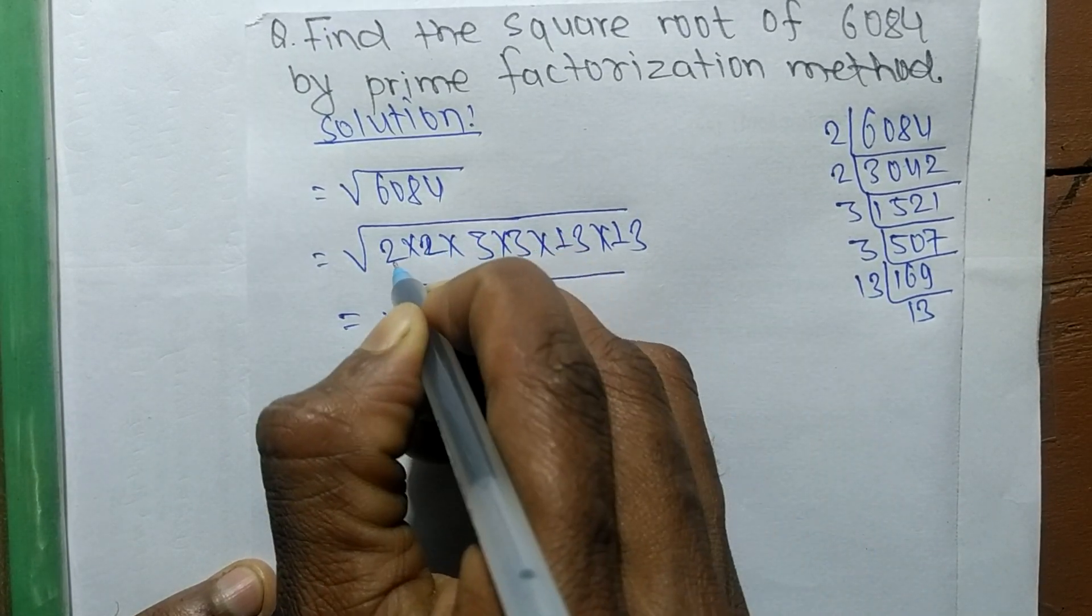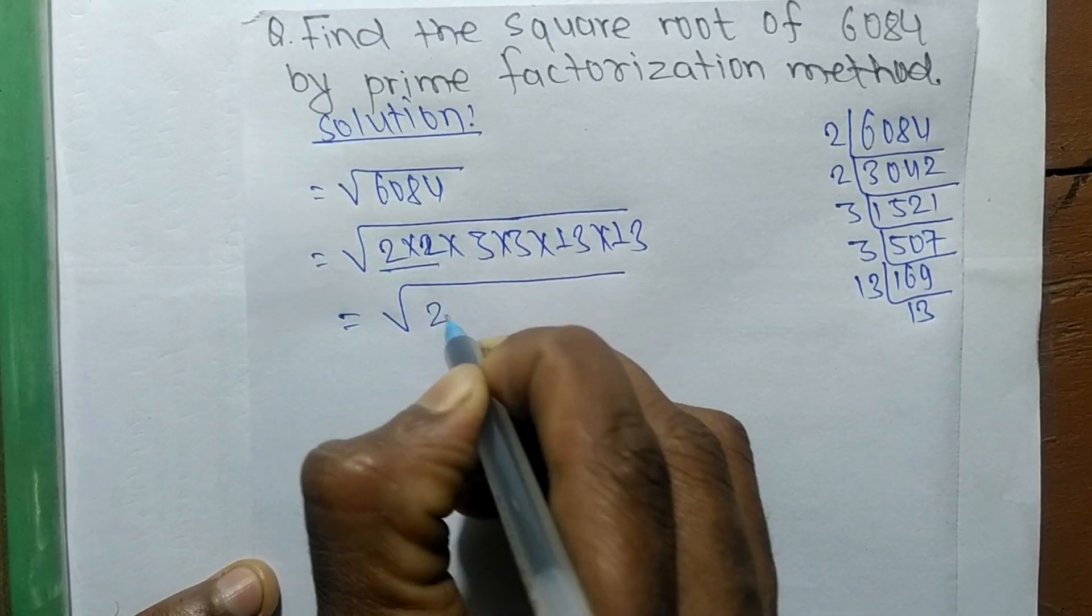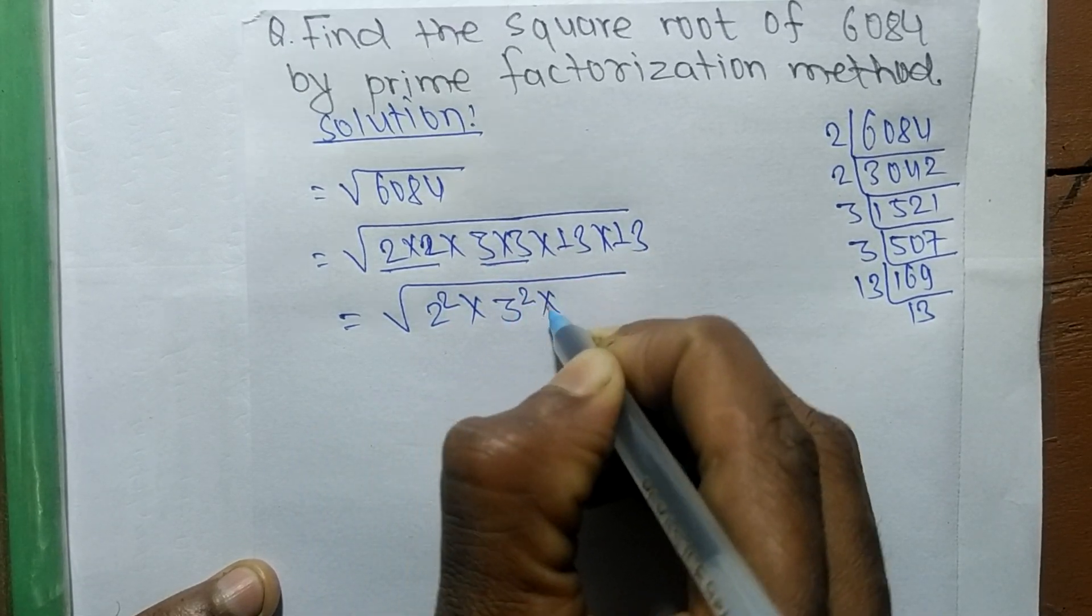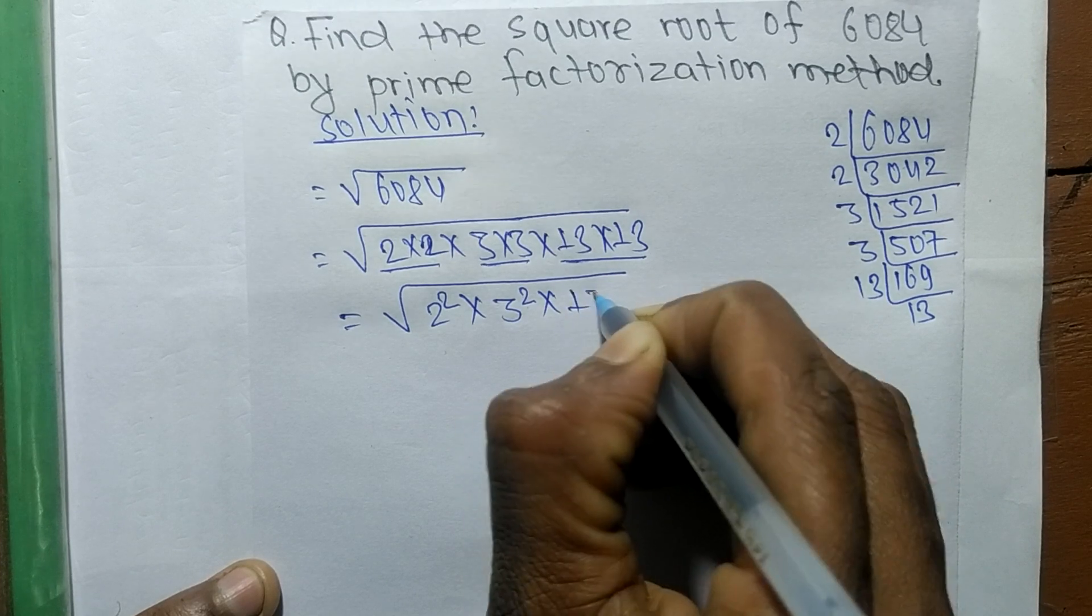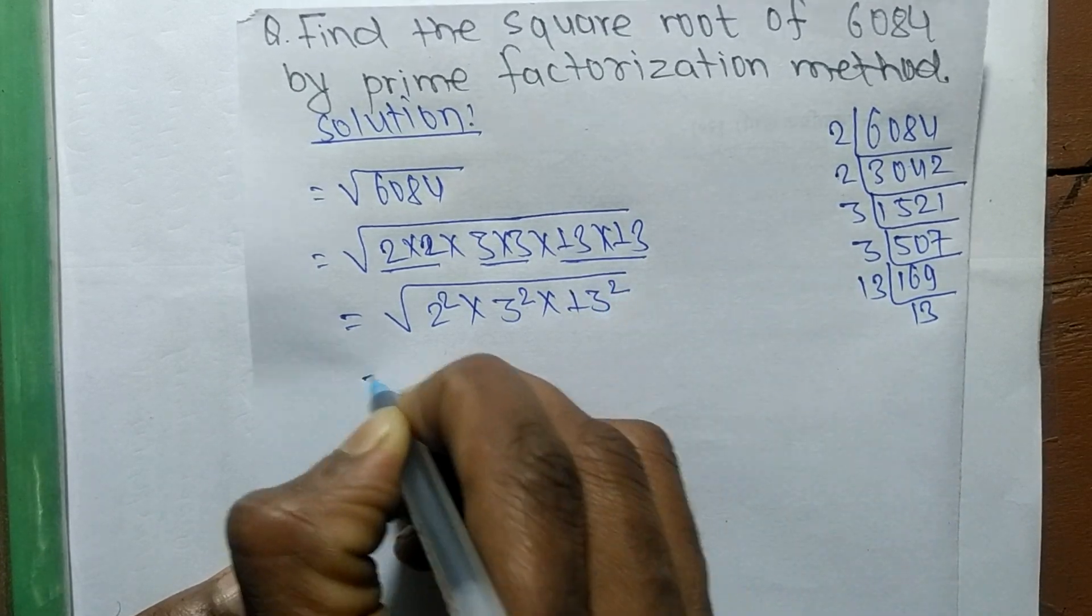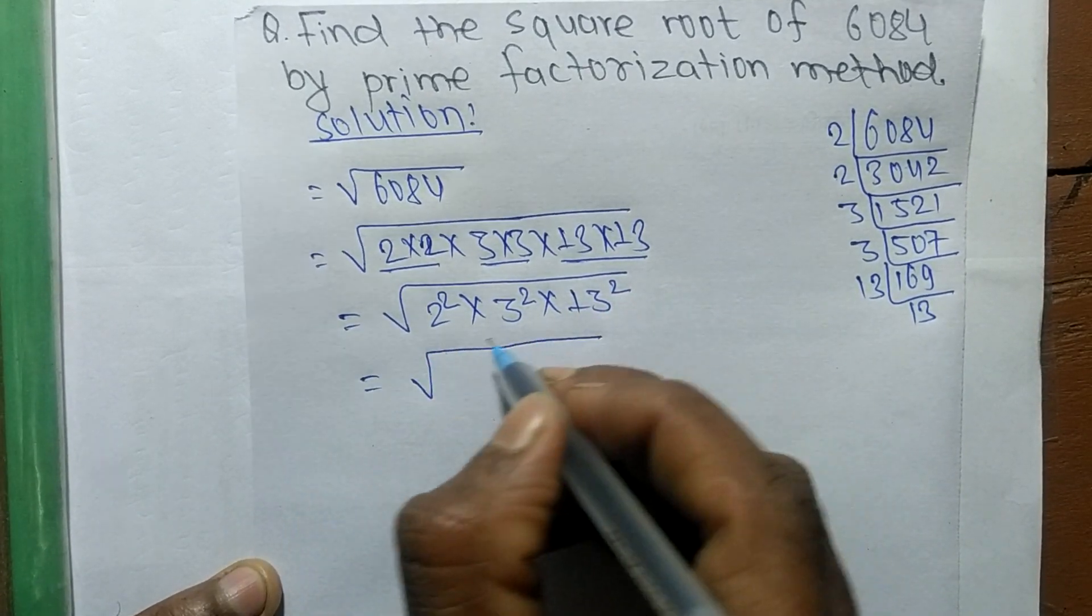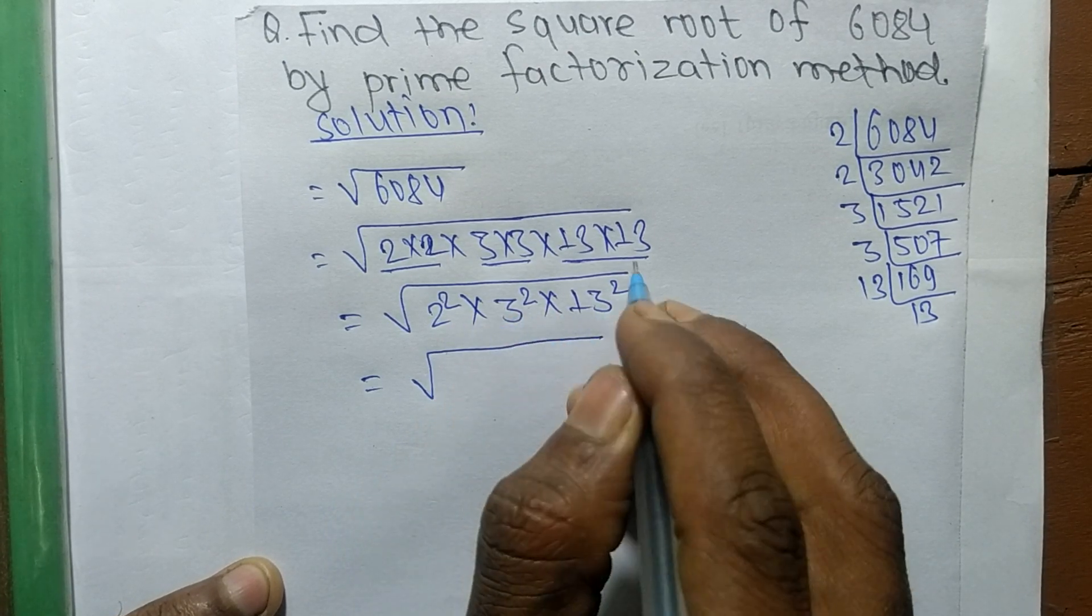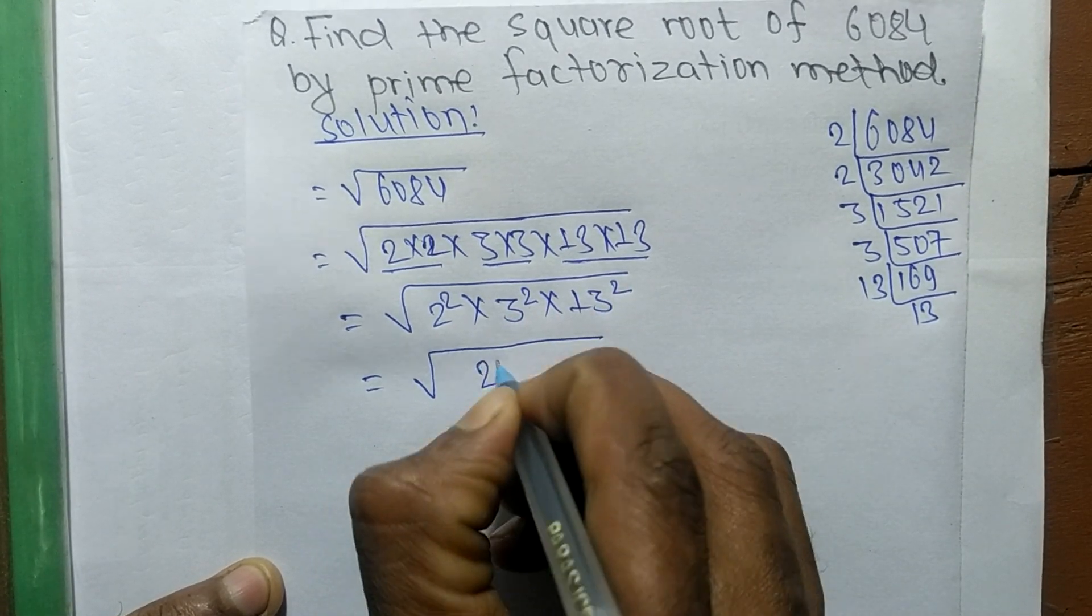So 2×2 means it is 2 squared, 3×3 is 3 squared, 13×13 is 13 squared. Square is present in all these numbers, so we take the square as common. So it becomes (2×3×13) whole squared.